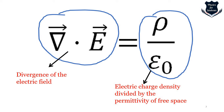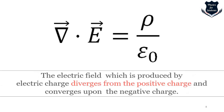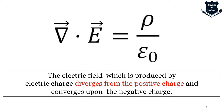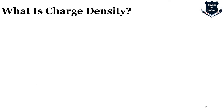The differential form also states that the electric field produced by electric charge diverges from the positive charge and converges upon the negative charge. This is an important point. Now before explaining further, we need to understand what charge density is and why we need it.